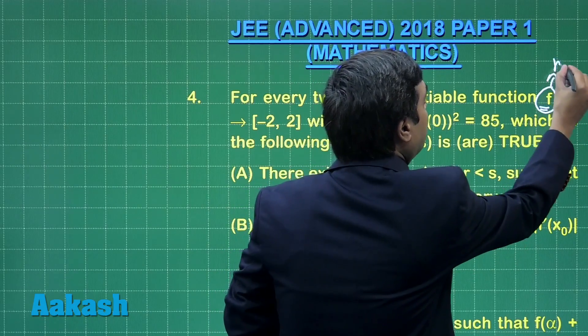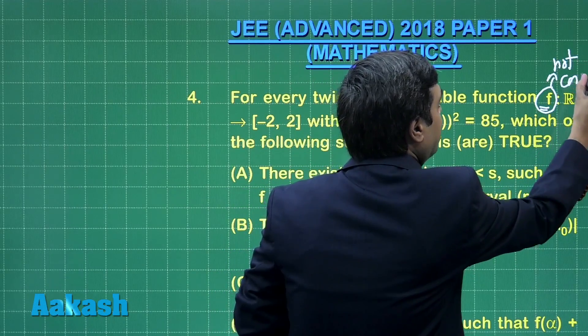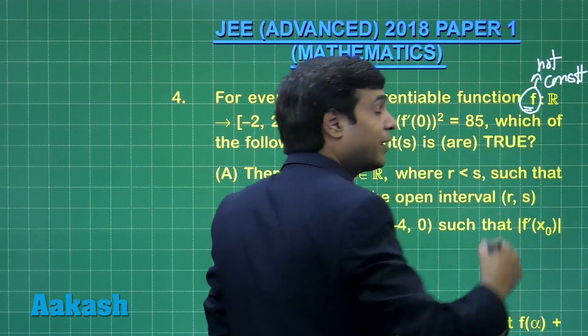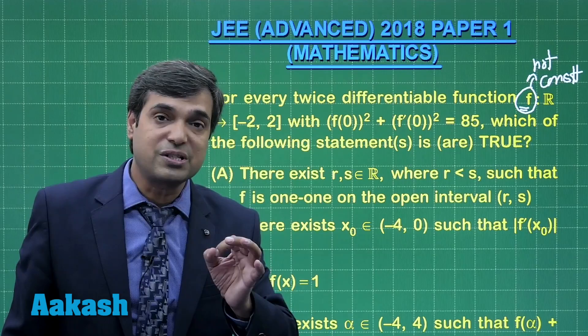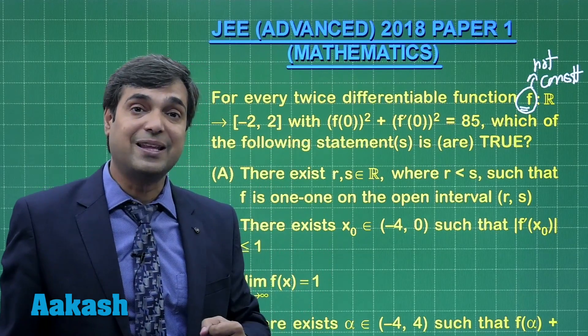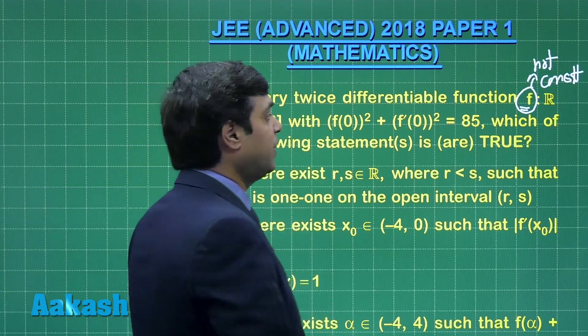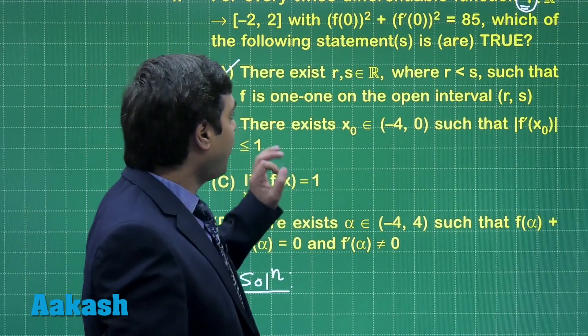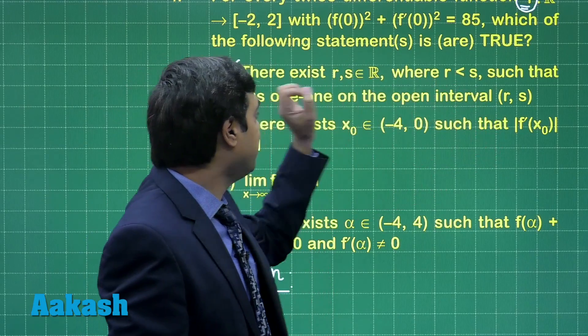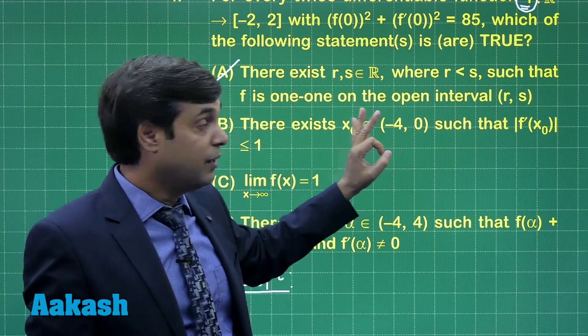This is not constant and it is continuous. Function is not constant and it is continuous means that it is always possible to find